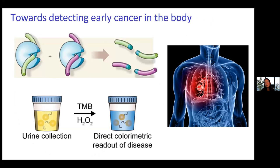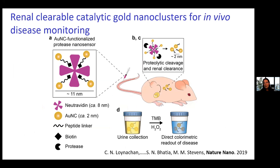One of the biosensing approaches we've recently developed is about helping detect early cancer in the body faster — essentially a urine test that will turn blue if you have upregulated markers related to cancer. The kind of molecules we're interested in detecting are proteases, which are often upregulated in different inflammatory states, including some specific ones for certain cancers.